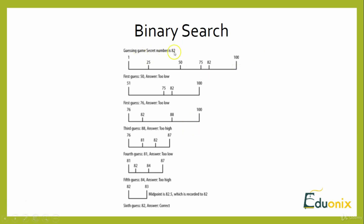For example, say the secret number is 82. My first guess is 50 — the answer is too low. So I guess 76 — too low again. Then my third guess is 88 — too high. That means the range is between 76 and 88. My fourth guess is 81 — too low, so the number is between 81 and 87. My fifth guess is 84 — too high. Finally, I guess 82, giving a midpoint of 82.5 which rounds to 82, the correct answer.